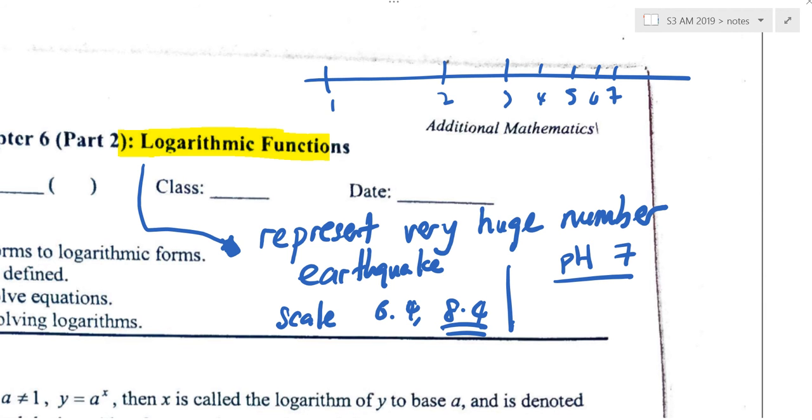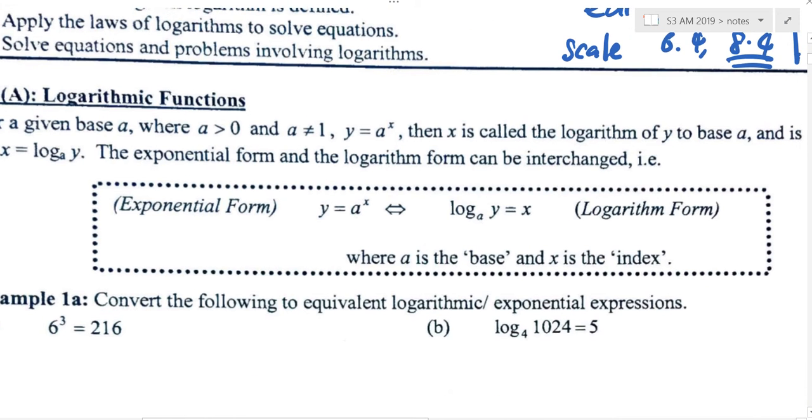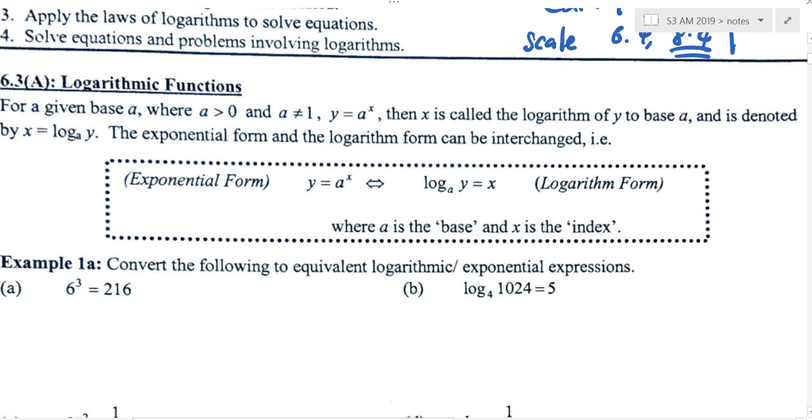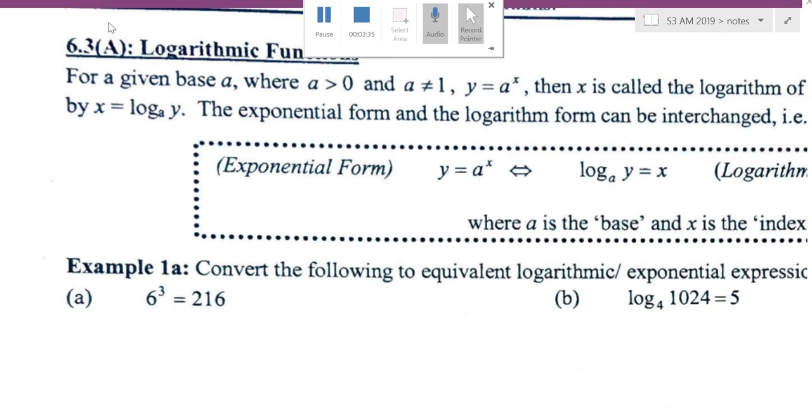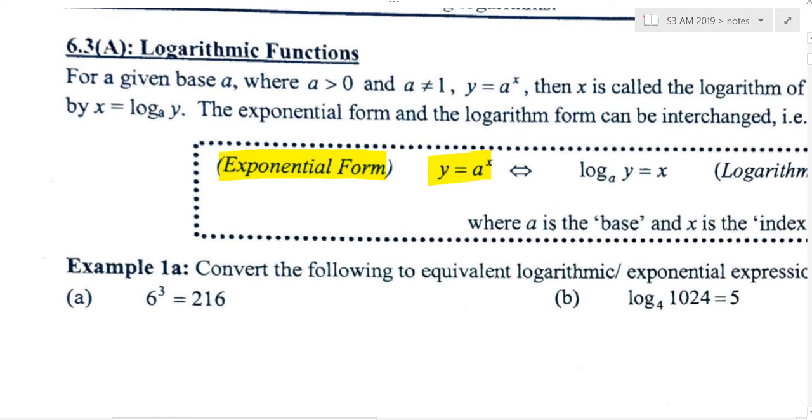So now we understand what is logarithm. We want to know how do we deal with logarithm. Can we look at some of the properties of logarithm? This is a very important thing. Over here, you see two boxes. This arrow means two-directional. I can change from left to right, I can change from right to left. Let's talk about the left one first. The left one is a very familiar one. What do you call A? Base. What about the X? Power, right?